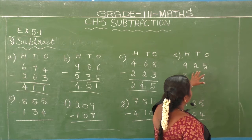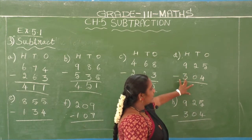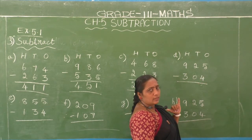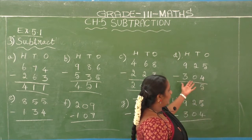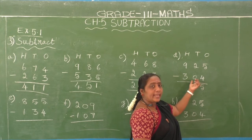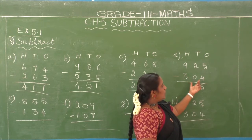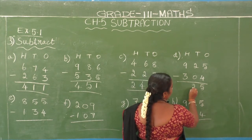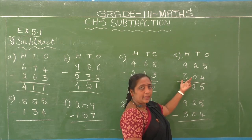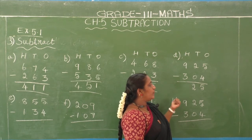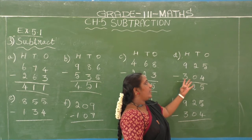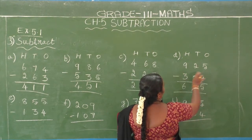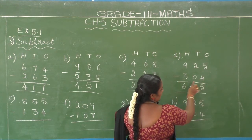D1: 925 minus 304. Ones place — second number 4, first number 5: 4 after 5. Difference is 1. Tens place — second number is 0; since 0 means nothing, 2 minus 0 equals 2 — comes automatically. Hundreds place — second number 3, first number 9: 3 after 4, 5, 6, 7, 8, 9. Difference is 6. So 925 minus 304 equals 621.